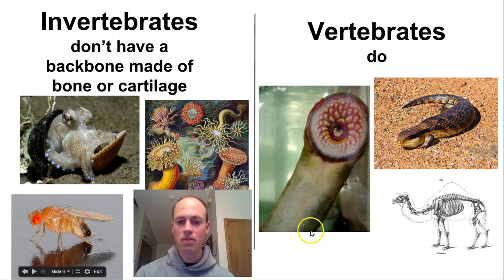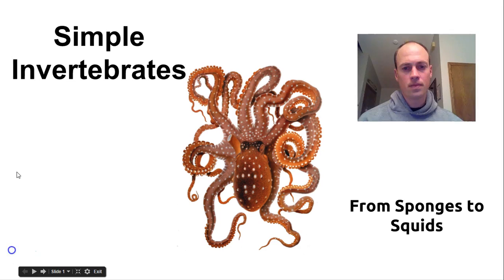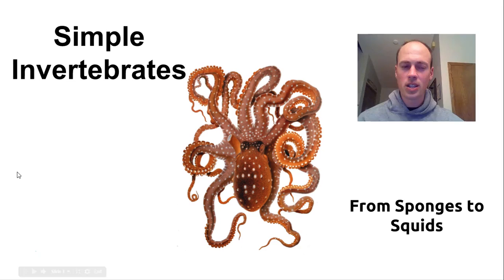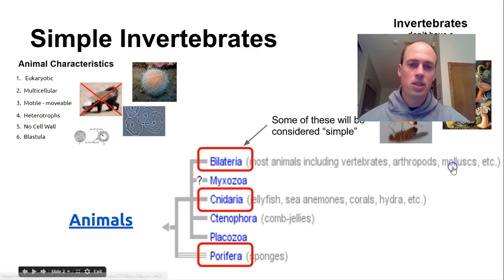Vertebrates do have a backbone made of bone or cartilage. They are very diverse too, ranging from the weird lamprey sucker fish to lizards, camels, and humans. So that is a look at invertebrates versus vertebrates. We're going to take a look at some really simple invertebrates first, classified into groups, each a little different from the one prior — everything from sponges to squids.